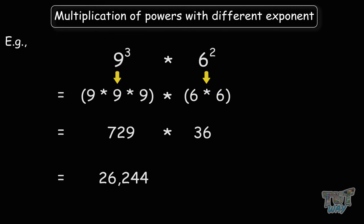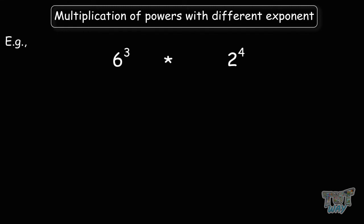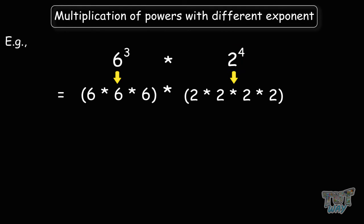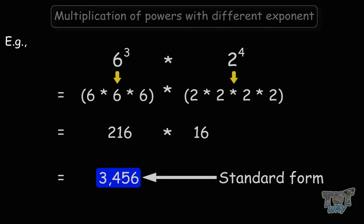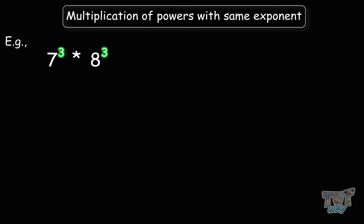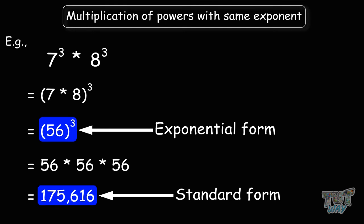Now we'll solve some mixed questions. 6 to the power of 3 times 2 to the power of 4: bases are different and exponents are also different — no law of exponents. 6 cubed is 216 and 2 to the power of 4 is 16; 216 times 16 equals 3,456 in standard form. Next: 7 to the power of 3 multiplied by 8 to the power of 3 — exponents are the same, so multiply the bases: 7 times 8 is 56, giving 56 to the power of 3 in exponential form, or 175,616 in standard form.